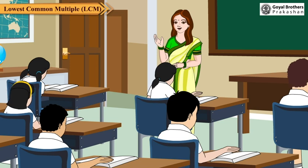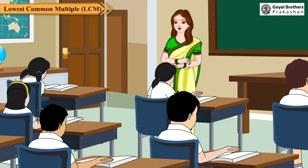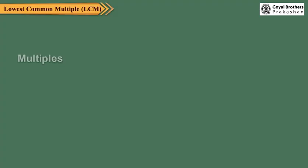Let us try to find out the common multiples of 8 and 12. Multiples of 8 are 8, 16, 24, 32, 40, 48 and so on.